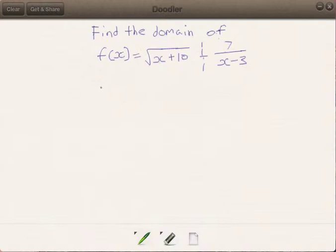We know that for square root, any value that is under the square root must be greater than or equal to 0. Therefore, x plus 10 must be greater than or equal to 0 for it to be defined. That would suggest that x is greater than or equal to negative 10.